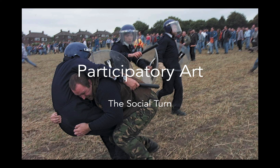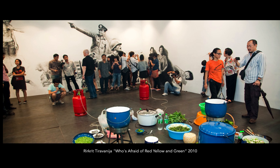Let's look at a few examples by way of introduction. Here's Rirkrit Tiravanija, a Thai artist who's well known and associated with this type of work. Here you have people in a gallery enjoying a Thai curry that the artist has made — in the gallery. They're talking, and if you saw this and didn't know if it was a work of art, you would say this looks like a fun get-together or a party. And then people drawing on walls or something like that.